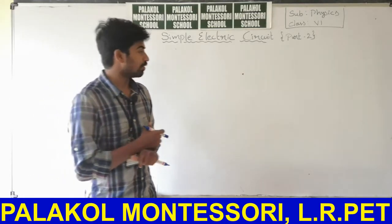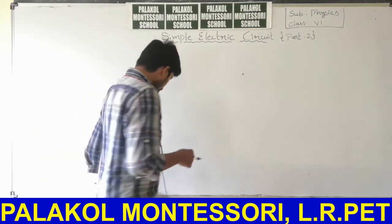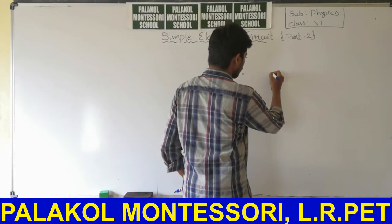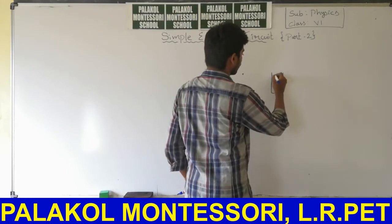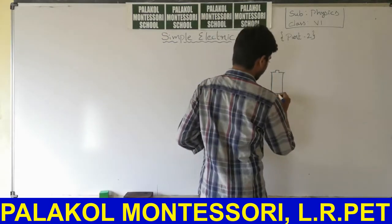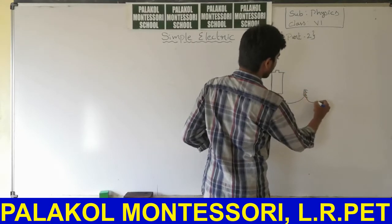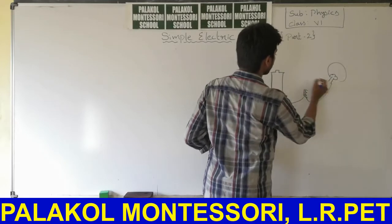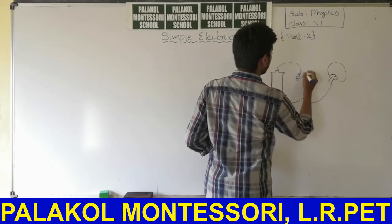And later we have seen what is an electric circuit. Electric circuit is a closed path between batteries and bulb.